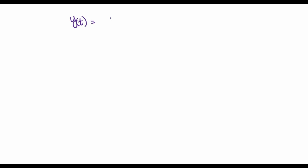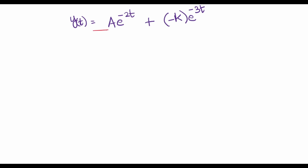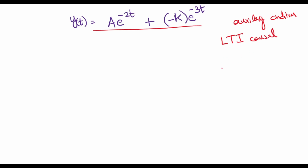To find the total solution y of t, we add the homogeneous solution A·e^(−2t) plus the particular solution minus k·e^(−3t). In addition to this equation, we need an auxiliary condition to find the constants. We can find this by assuming our system is an LTI causal system, which means that if the input x of t is zero until some time t-naught, then the response y of t will also be zero until t-naught.